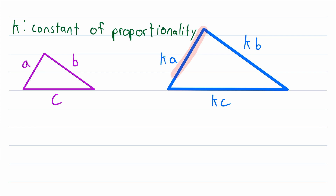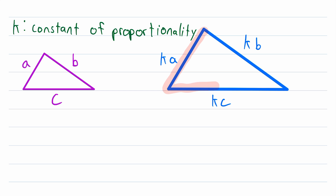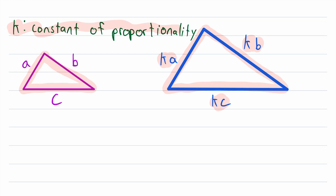It means that the side lengths of one triangle are just the side lengths of the other triangle multiplied by a constant number. So again, in this case, we say that the sides of this blue triangle are proportional to the sides of this purple triangle with a constant of proportionality of K, because each side length of the blue triangle is equal to K times the corresponding side length of the purple triangle.